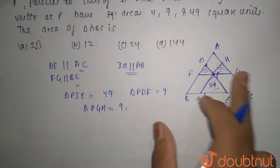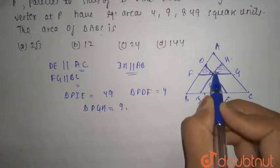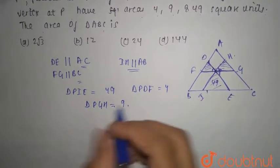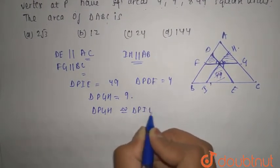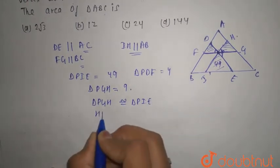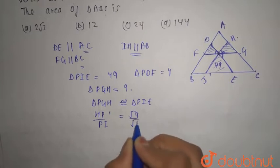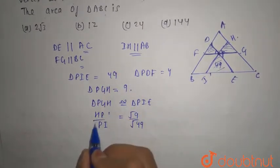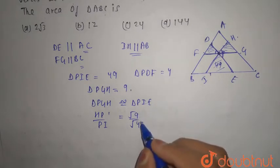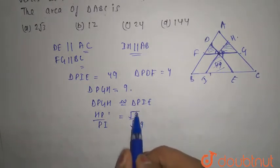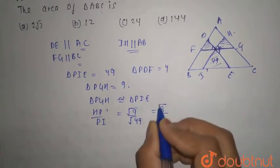These triangles are similar to each other by the congruent angle property. Triangle PGH is congruent to triangle PIE. Therefore the ratio HP to PI equals √9 to √49, because the ratio of sides equals the square root of the ratio of areas. So √9 is 3 and √49 is 7, giving ratio 3:7.